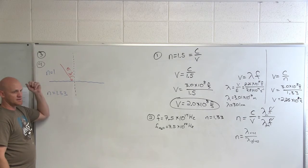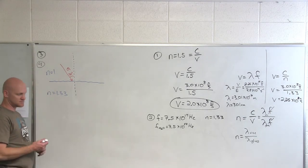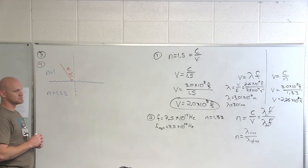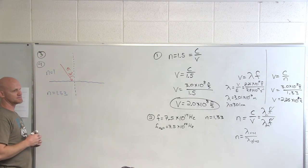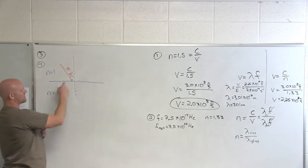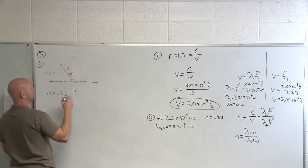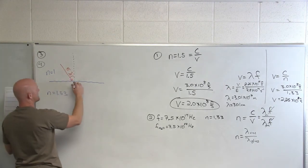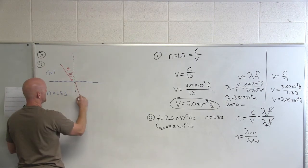So in this case, we're going to bend toward or away from the normal? And why are we bending toward the normal? Because you're going from a smaller index to a larger index. From larger angle to smaller angle. So it's going to bend towards the normal.